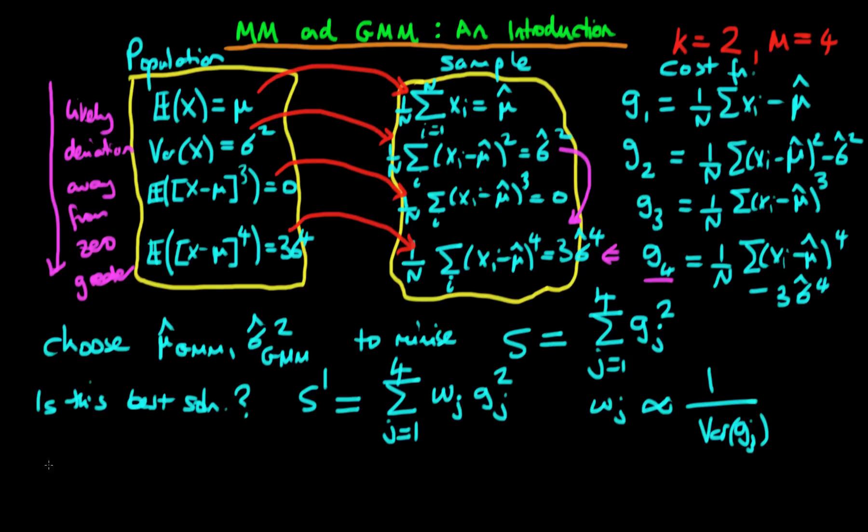So actually what we end up doing is we end up defining something which we call G, and I'm going to write a line underneath it to emphasize the fact that we're talking about a vector here. And G, I'm going to call it actually G hat, because actually each of these costs here really is something which we're estimating.